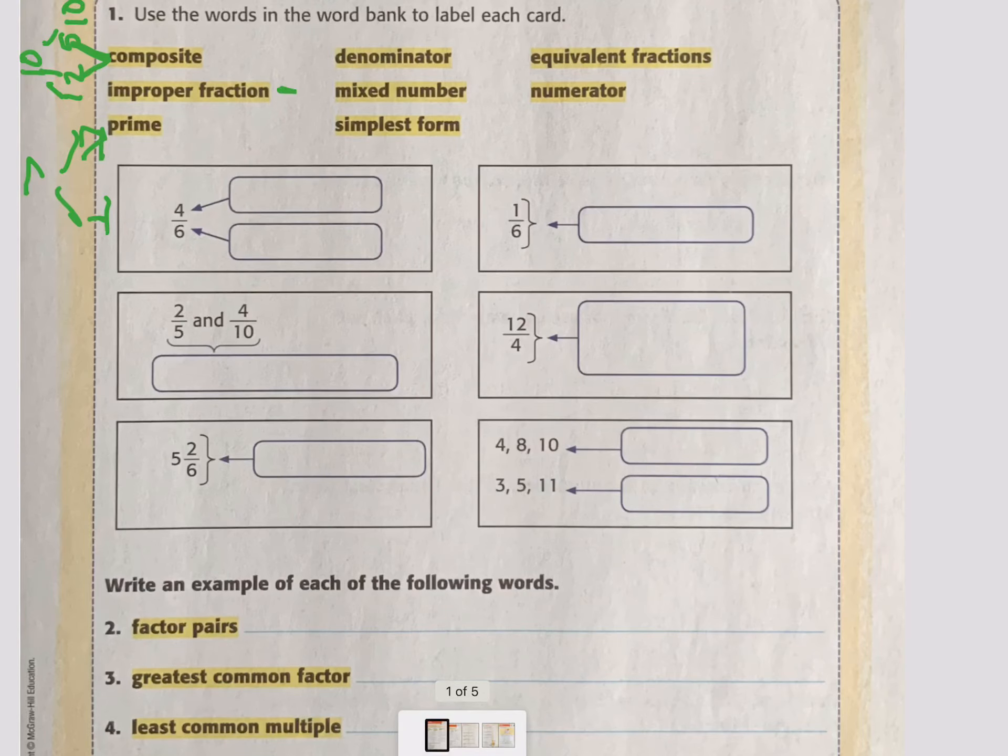Then we've got improper fraction, and that's connected to mixed number. Well, an improper fraction is when you have the big number on the top, right? Because that's representing a mixed number but in fraction form. And then a mixed number is when you have a whole number with a fraction, so like 3 and 1/2.